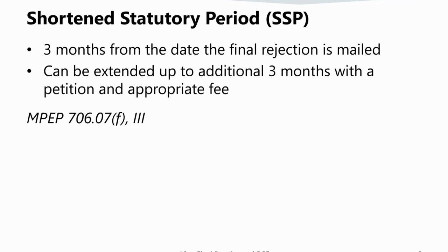When you issue a final office action, the applicant has a shortened statutory period of three months from the date of the mailing of the final rejection to provide a complete and proper reply. This period can be extended up to an additional three months with a petition and the appropriate fee.